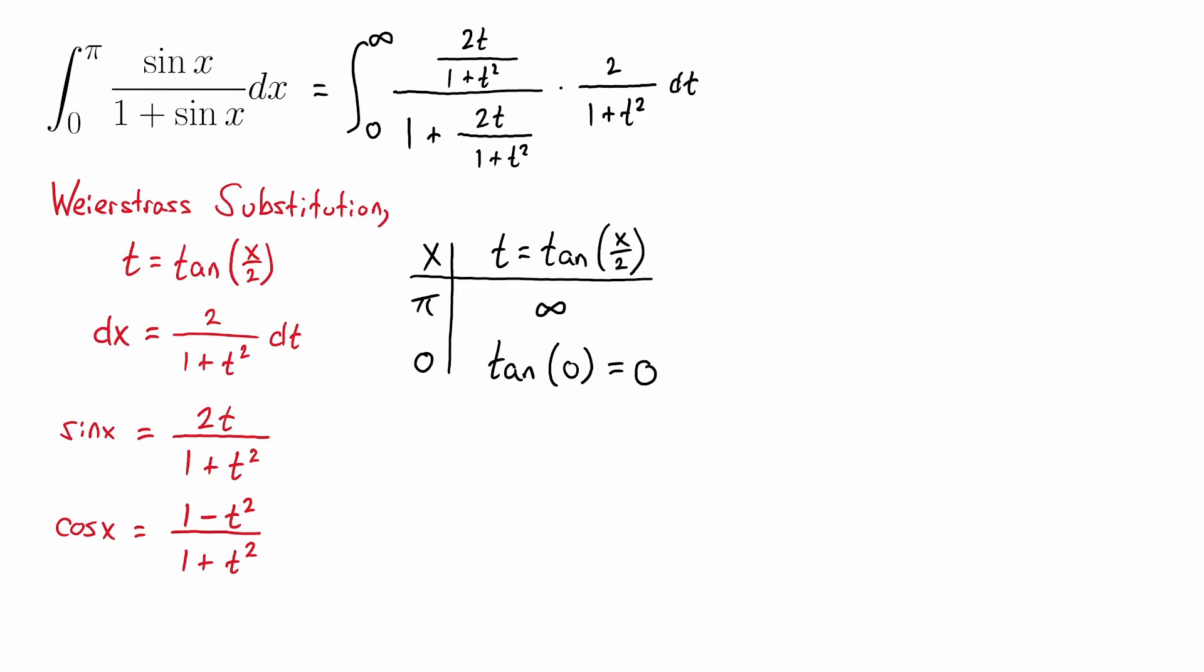That gets replaced with just 2 divided by 1 plus t squared dt. And from here, it's a matter of simplifying that rational expression for t because you always get a rational function here that you're going to end up integrating with using the Weierstrass substitution. And then for evaluating that integral, it comes down to a partial fraction decomposition. So let's go ahead and get to all that work.